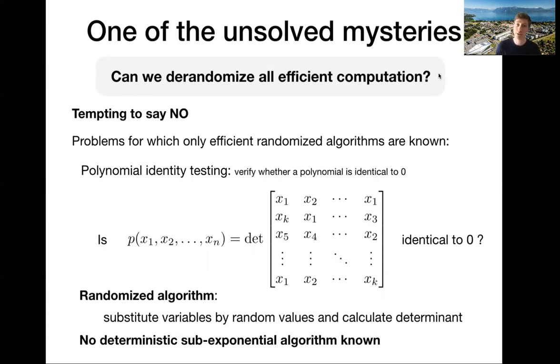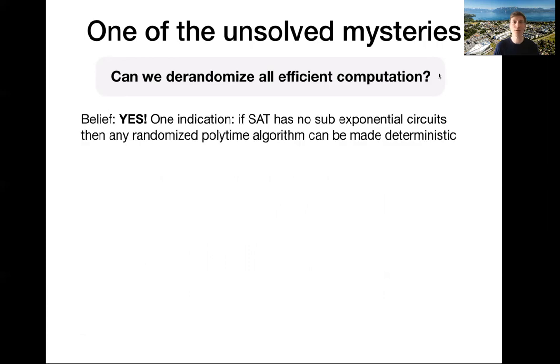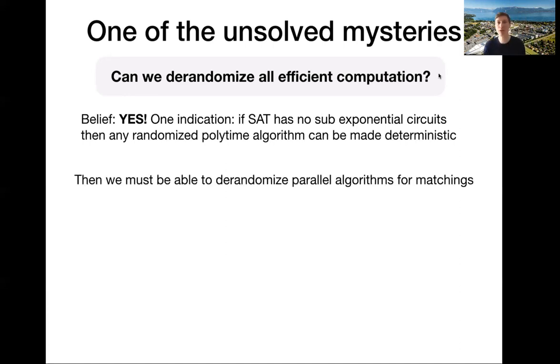However, there's no deterministic, even sub-exponential algorithm known. So the best deterministic algorithm will take exponential time. So at first you might think randomization must help in the design of efficient algorithms. But then, in fact, we believe that everything that we can do randomly efficiently, we should be able to do deterministically efficiently. And one strong indication is by Impagliazzo and Wigderson, who proved that if SAT has no sub-exponential circuits, then any randomized polytime algorithm can be made deterministic. But if this is true, then we should at least be able to derandomize the randomized parallel algorithms for the matching problem.